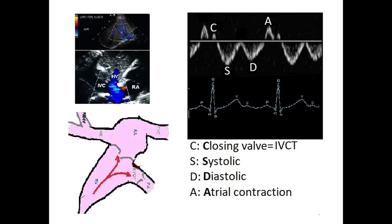To answer this question in detail, we first need to know what the normal pattern of the hepatic vein Doppler looks like. To obtain hepatic Doppler, we can go subcostal or intercostal — transverse as shown in the top image, or sagittal — and find a hepatic vein parallel to the cursor. We place the sample volume proximally in the hepatic vein and activate pulsed wave Doppler to get a spectrum.